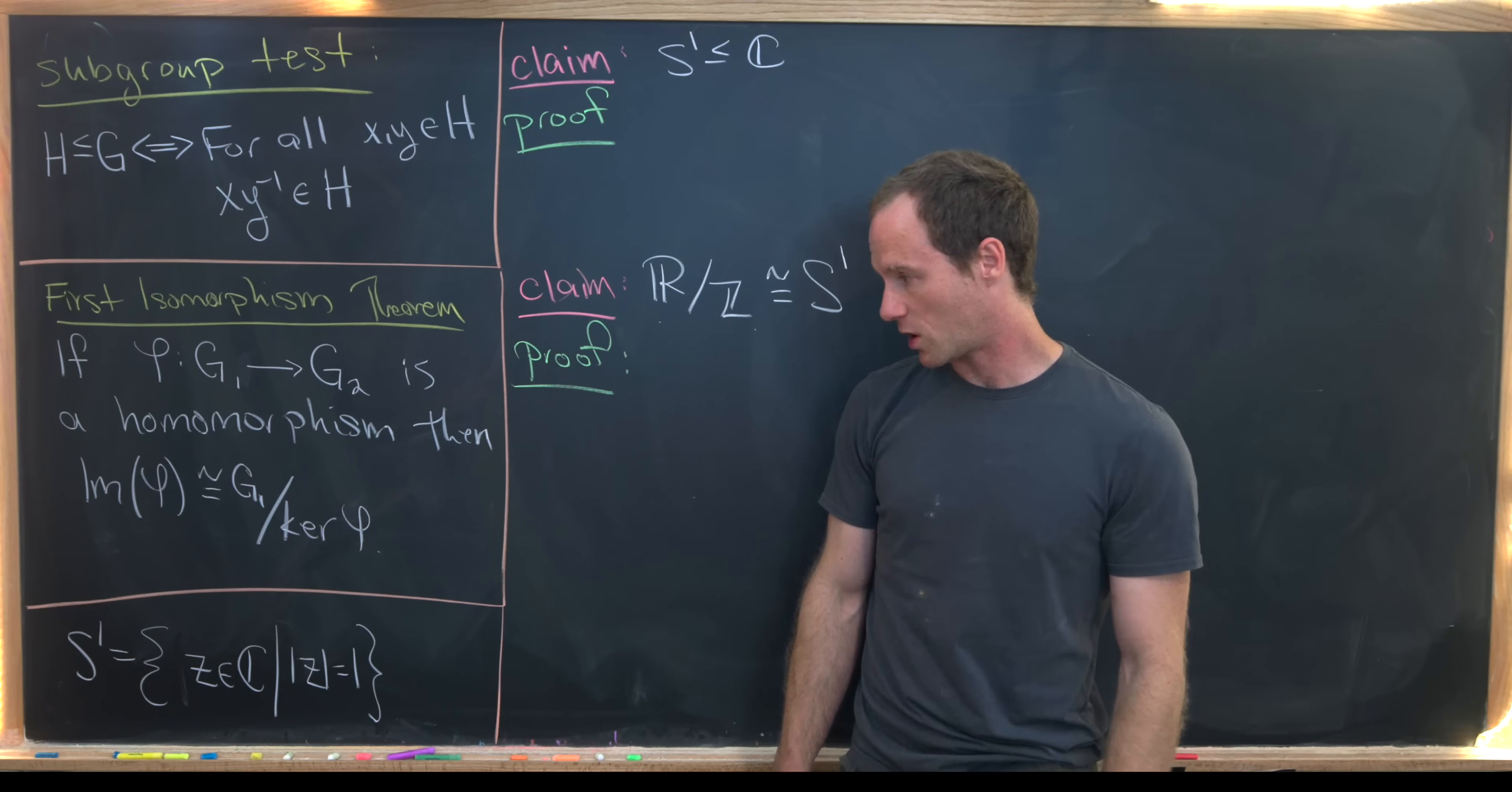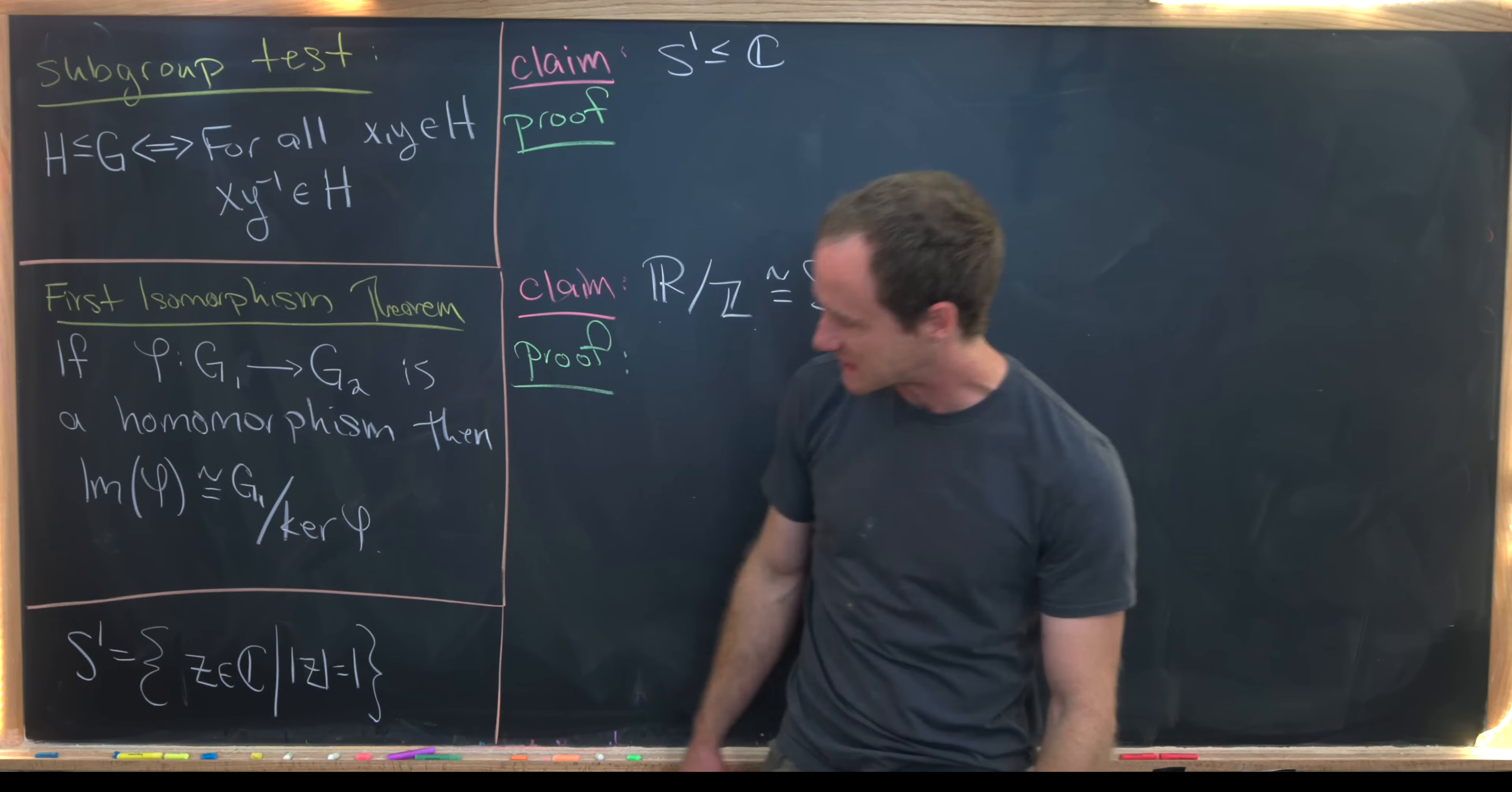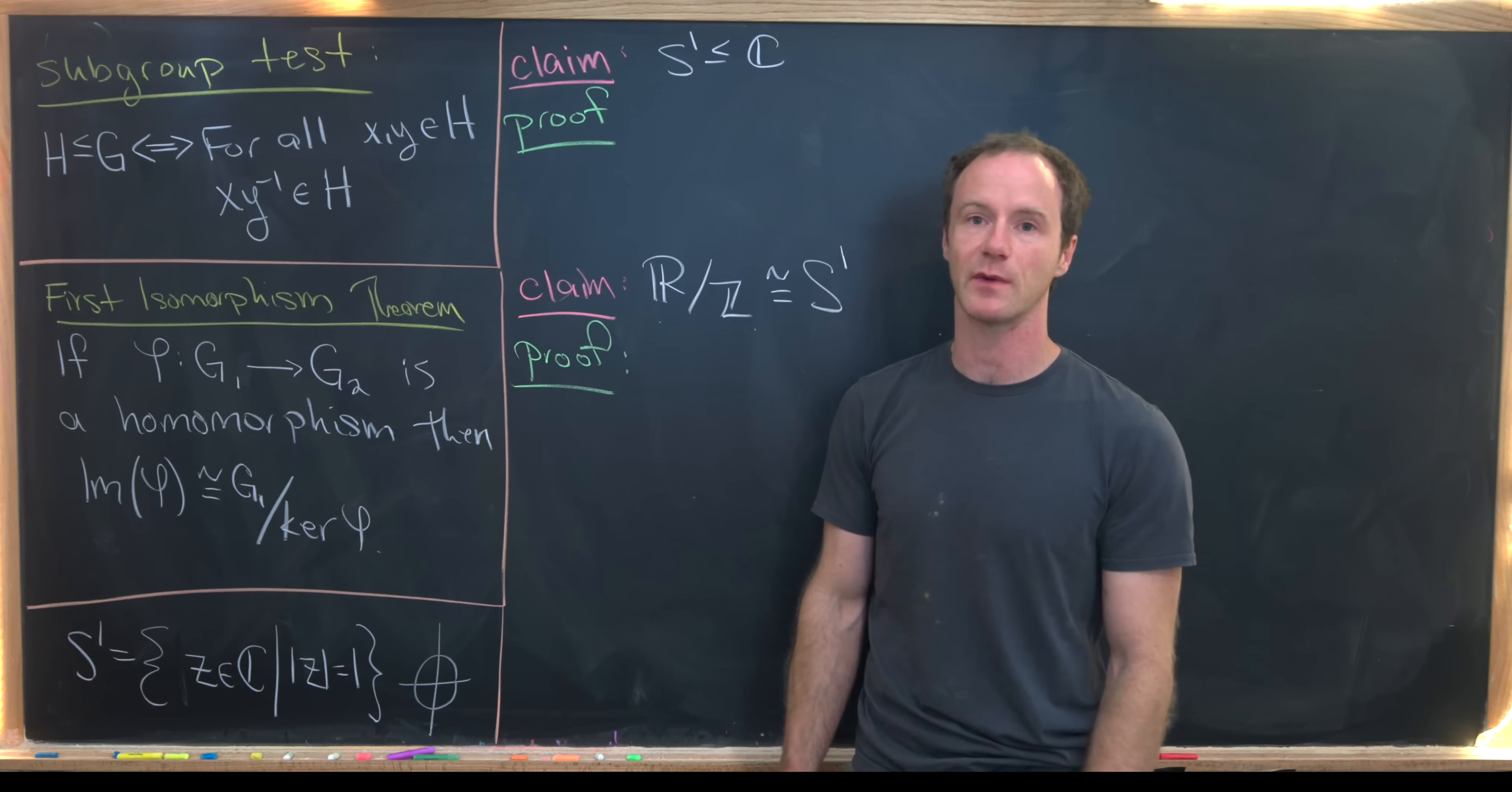Next, I want to recall that the circle can be thought of as a sub object of the complex numbers. I should say the unit circle here. So I've written that as S1. That can be identified with all complex numbers whose modulus is one. So that ends up giving us just a circle with radius one centered at the origin in the complex plane.